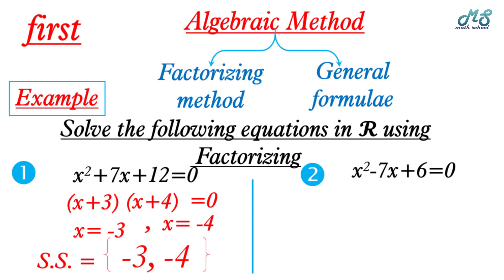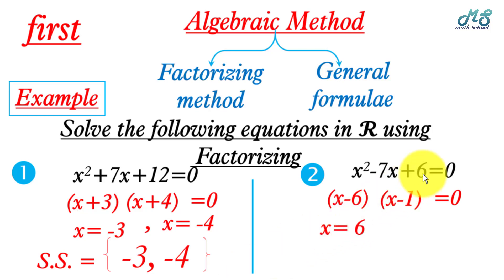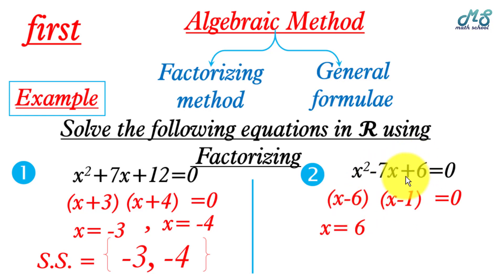Number two: x squared minus 7x plus 6. We factorize the left-hand side as x minus 1 times x minus 6 equals zero, because 6 times 1 equals 6 and their sum is 7. Pay attention — the two numbers 6 and 1 have the same sign as the middle term. We deduce that x equals 6 and x equals 1, so the solution set is {6, 1}.